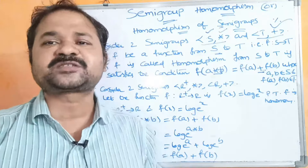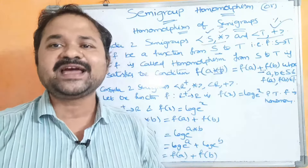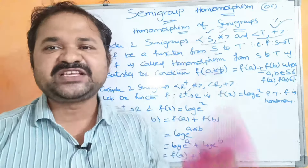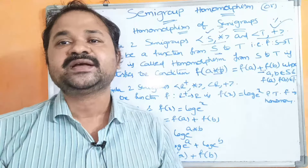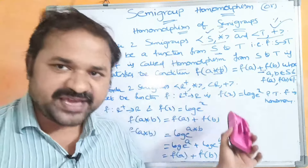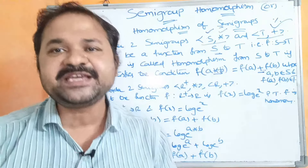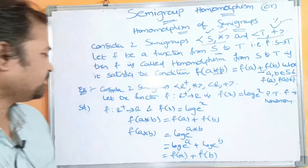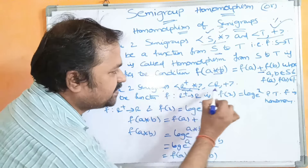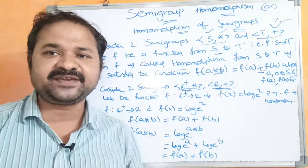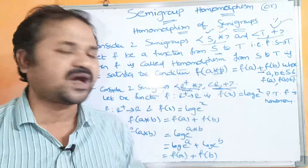Let us see an example for semigroup homomorphism. Consider two semigroups (R⁺, ★) and (R, +). The first semigroup is (R⁺, ★) and the second semigroup is (R, +).